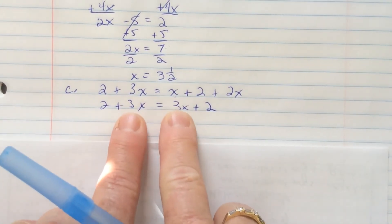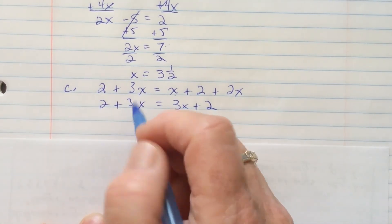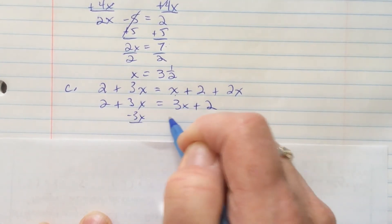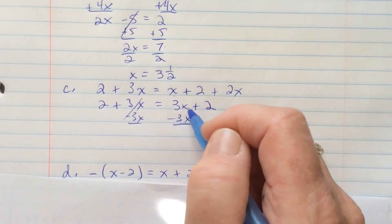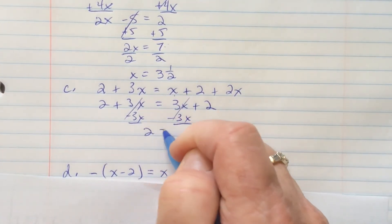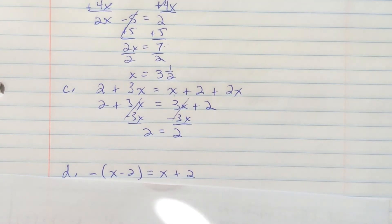The next thing, since we have x's on both sides, we're going to remove 3x from both sides. And now, this is gone, and that is gone as well. 2 equals 2.